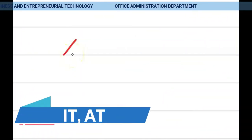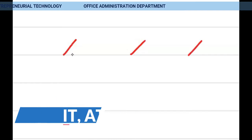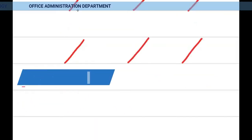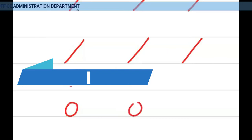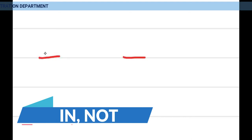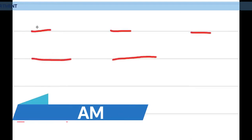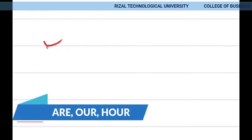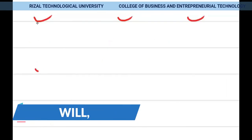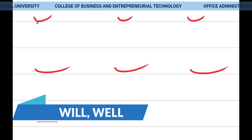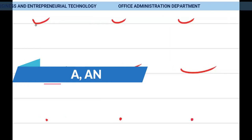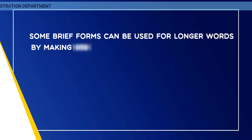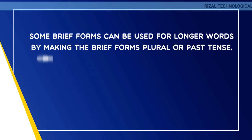The nine brief forms are: eat and at, represented by a T-stroke; would, represented by a D-stroke; I, represented by an A-stroke; in and not, represented by an N-stroke; am, represented by an M-stroke; of, represented by an O-stroke; our, represented by an R-stroke; will and well, represented by an L-stroke; and a and an, represented by a dot.